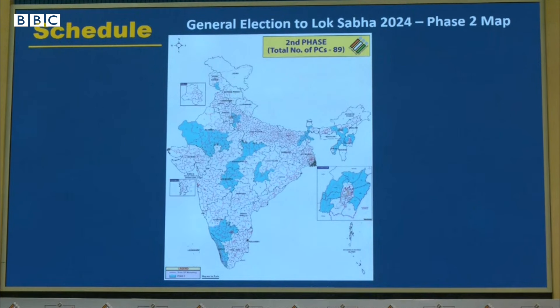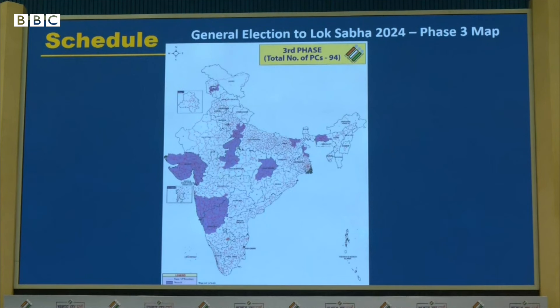Second phase: notification will start on 28th of March and date of poll will be 26th of April. Phase 3 notification would be from 12th of April and date of poll will be 7th of May. This phase will cover a total of 12 states.